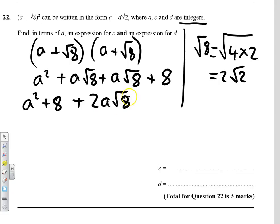we can take the square root of 8 out and put 2 root 2 in which gives us 4 A root 2 and then our number without the square root is A squared plus 8. So if we look back at our original C is basically this bit,